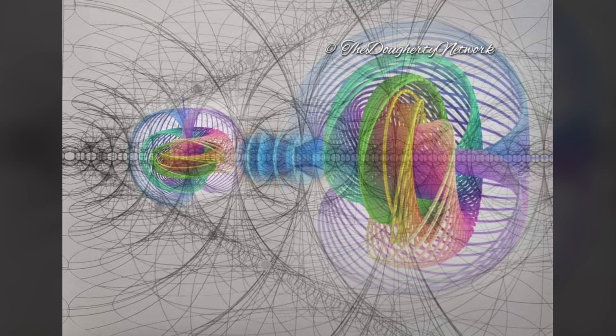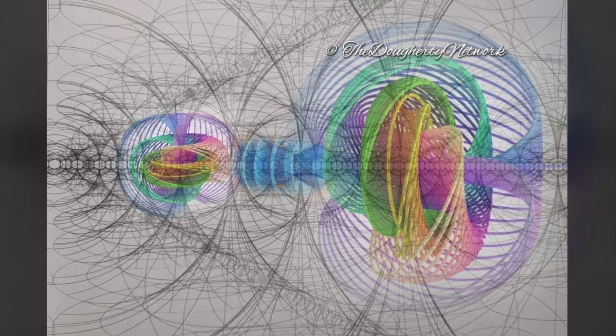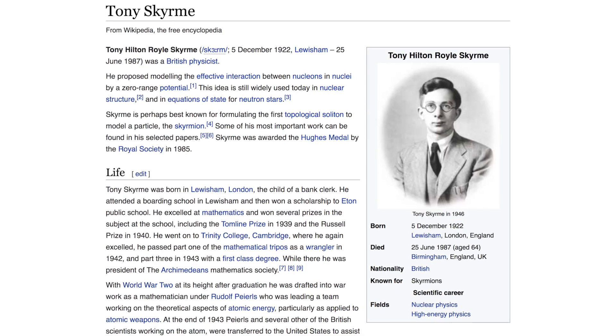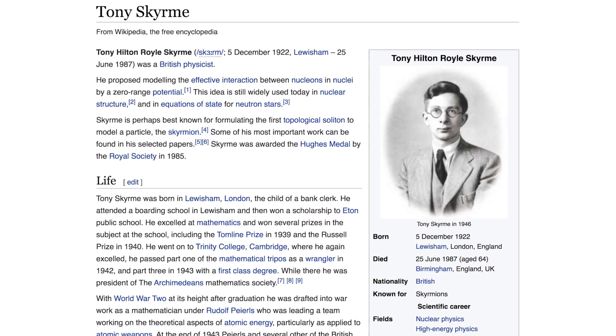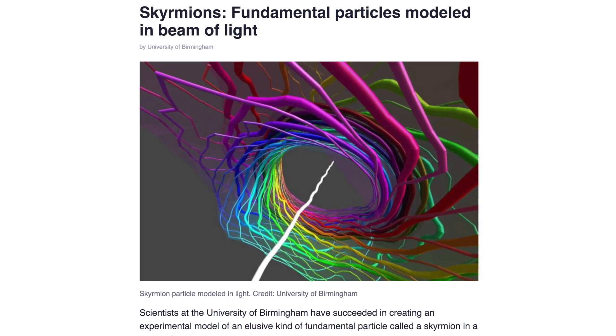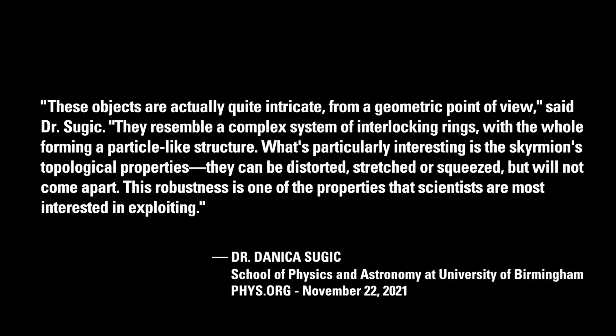Ah yes, hop vibrations, spinors, and twister theory, which fundamentally use Maxwell's equations. Look at the similarities there. We have to do a brief on British physicist Tony Skyrme, or at least his work on skyrmions, which are theorized to be the structure of ball lightning. These objects are quite intricate from a geometric point of view, said Dr. Sergic.